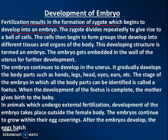In human beings, dogs, cows, and other animals, internal fertilization takes place — that is, within the female body. In external fertilization, the formation of the zygote takes place outside the female body. For example, fish and frog lay eggs outside the body, and fertilization takes place outside the body — that is external fertilization.